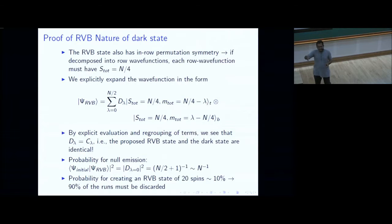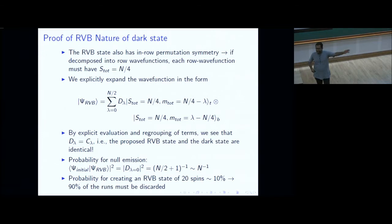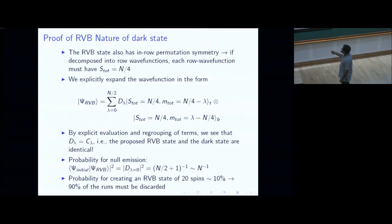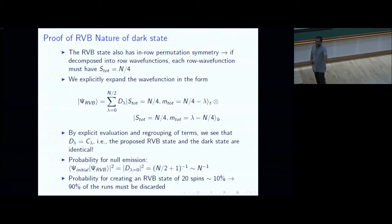You might worry that null emission is very unlikely. The probability of null emission scales as 1/N — it falls with N but not exponentially. For 20 spins the probability is 10%: you do the experiment 100 times, see no photons 10 times, and those 10 times you assert there's an RVB state. This can be useful for generating entangled states of 20 or more spins.